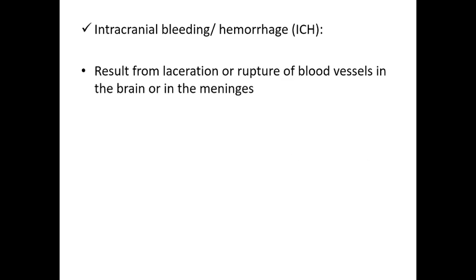Intracranial hemorrhage is bleeding into your brain tissues. It occurs when blood vessels in the brain or in the meningeal layers — the dura mater, arachnoid mater, and pia mater — are lacerated or ruptured. The blood cannot escape if there is no open skull fracture, leading to hematoma formation inside the cranial cavity.